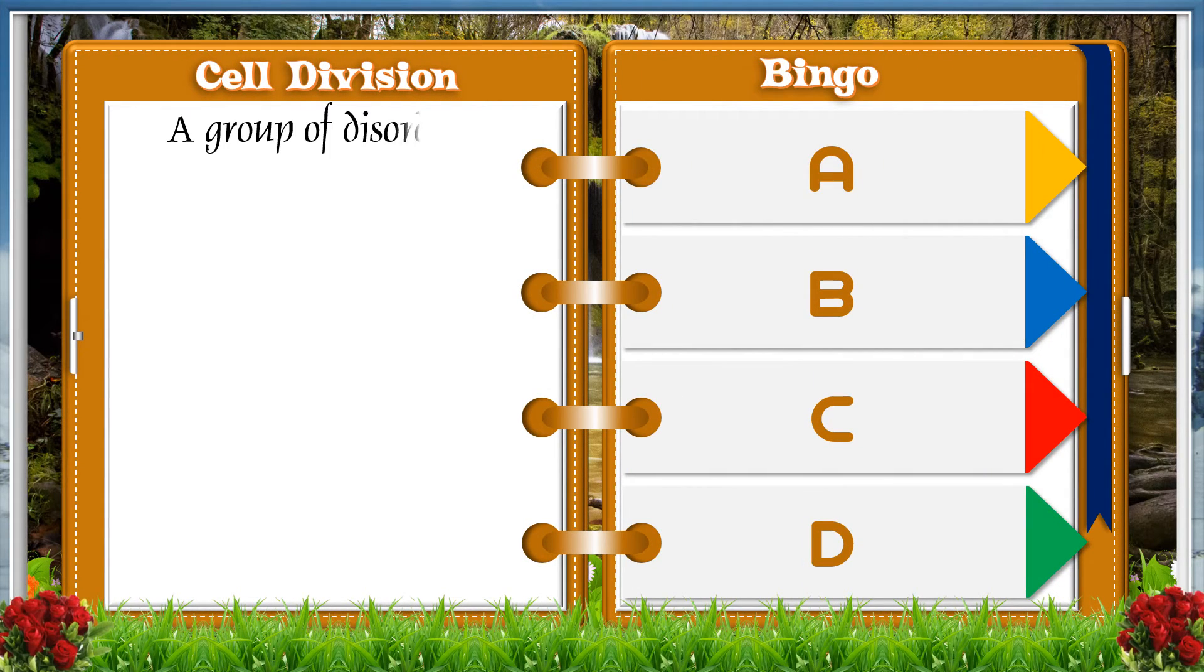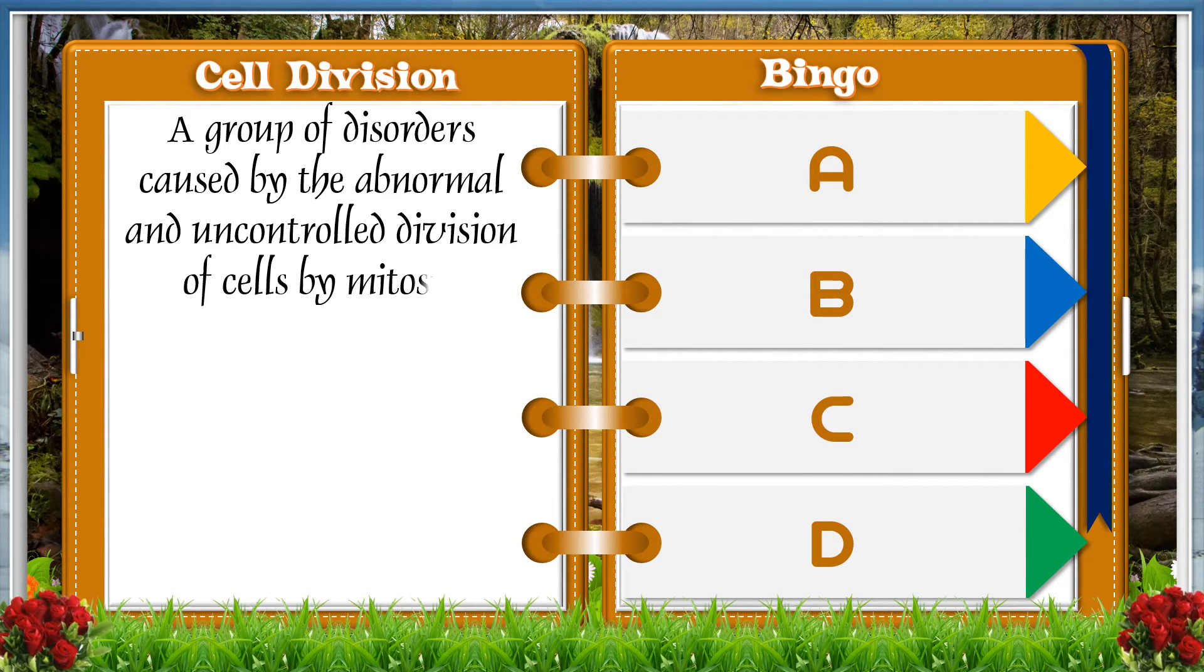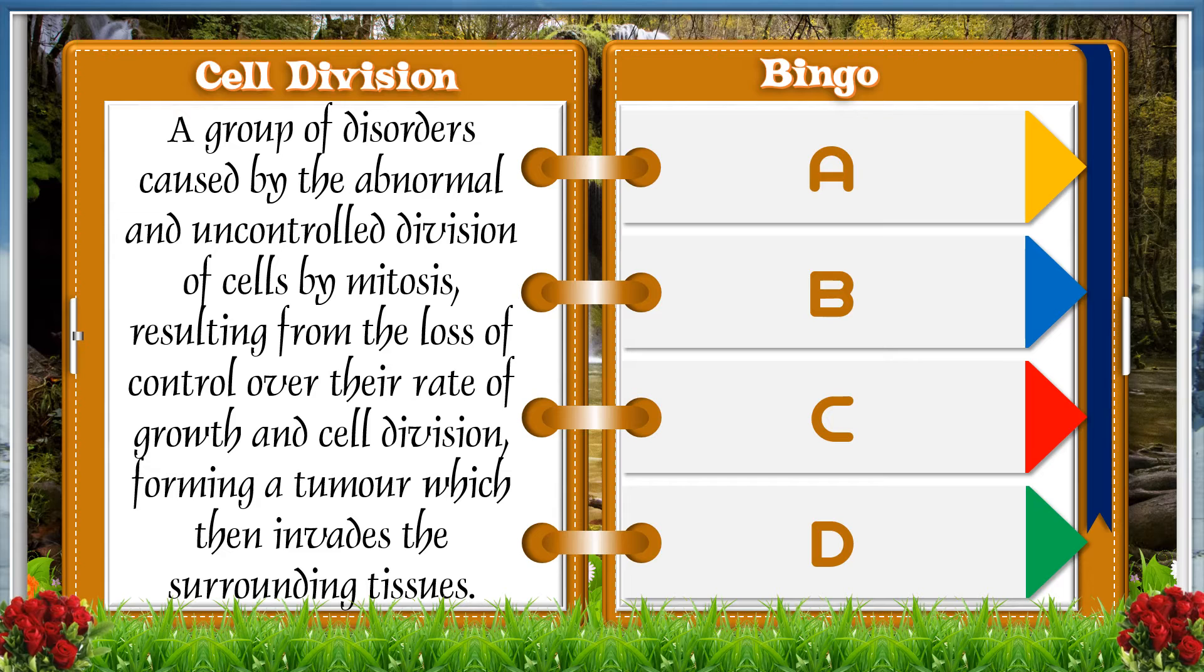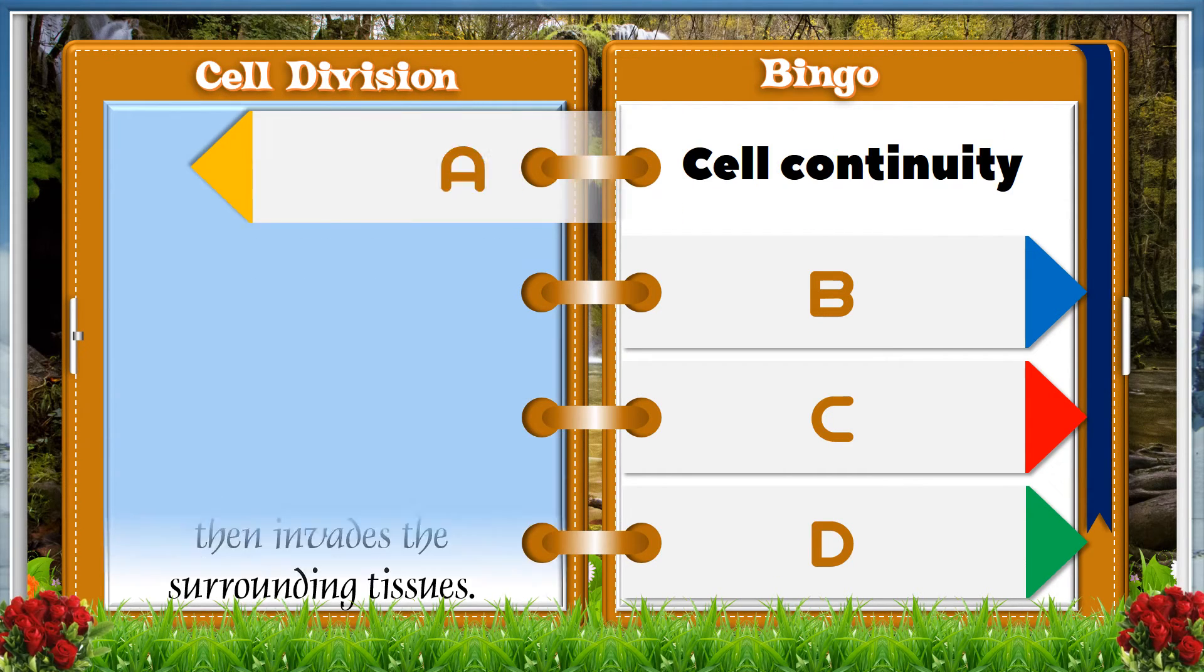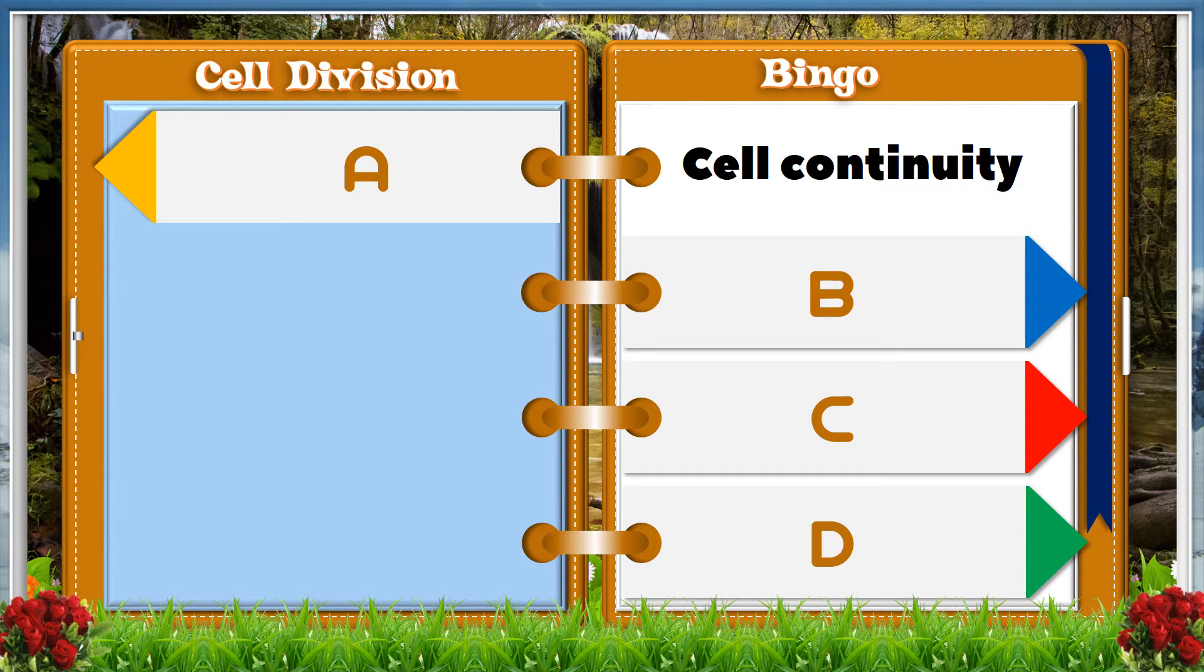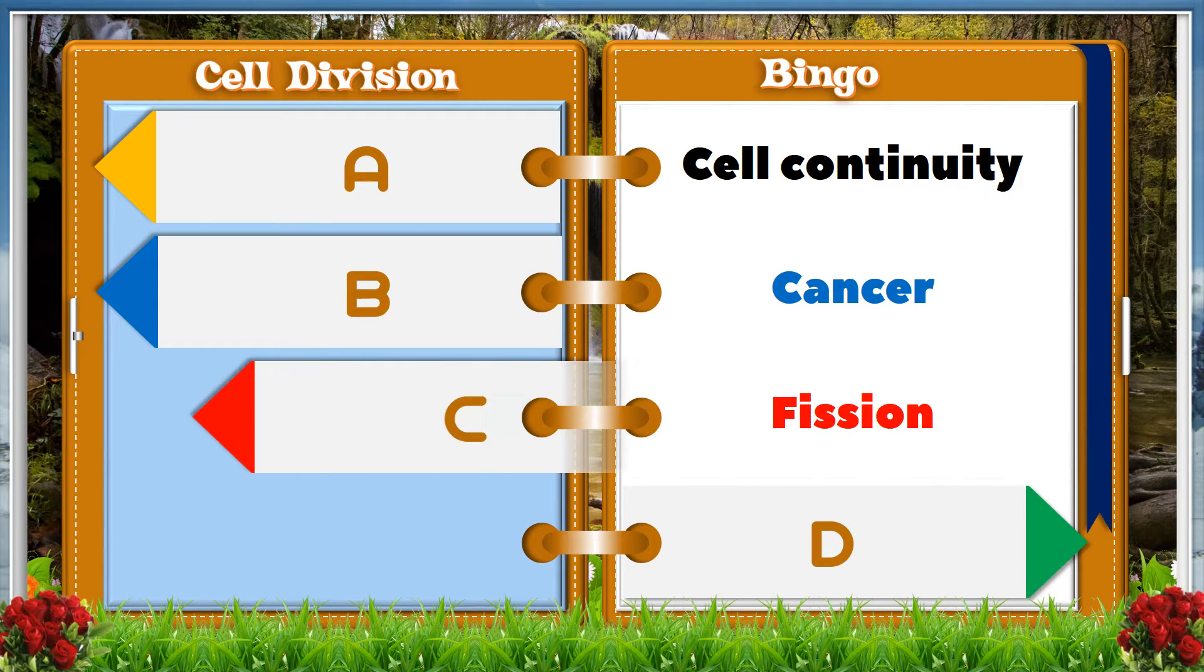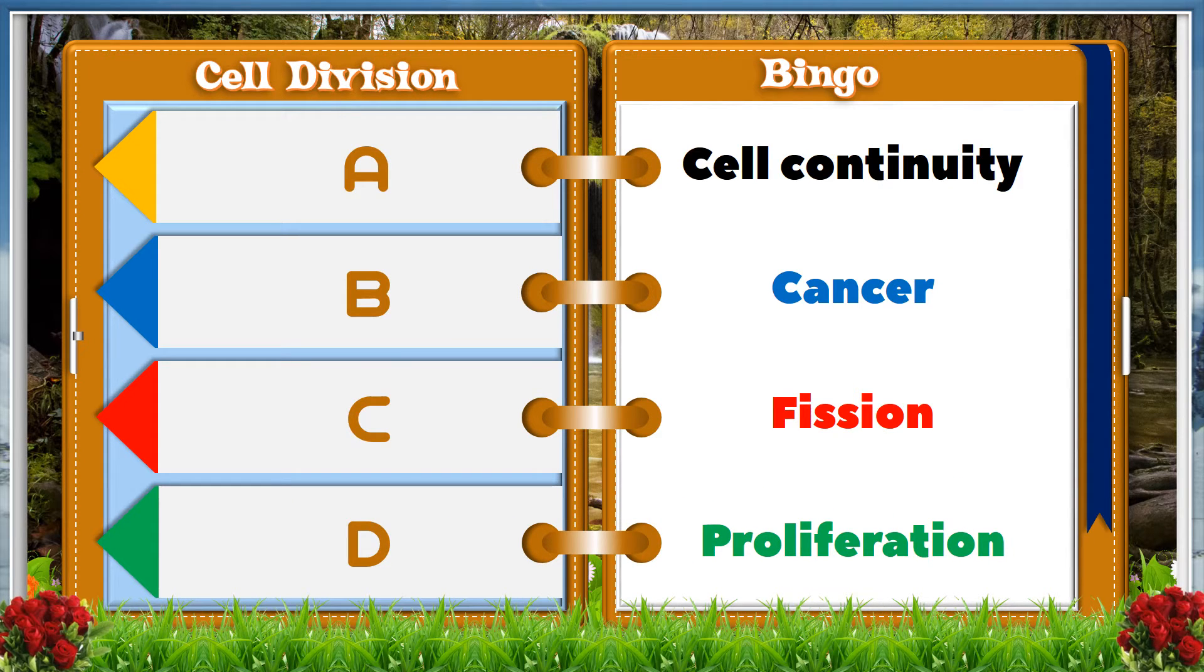A group of disorders caused by abnormal and uncontrolled division of cells by mitosis, resulting from the loss of control over their rate of growth and cell division, forming a tumor which then invades the surrounding tissue. A cell continuity, B cancer, C fission, D proliferation.